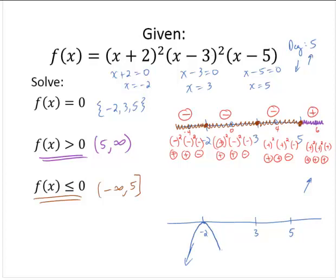x minus 3 squared means the graph bounces off again at 3. x minus 5 is multiplicity 1, so it passes through at 5. From the sketch, where the function is greater than 0, the outputs are positive — so we take that part of the number line. Where the outputs are less than or equal to 0 is everywhere else, and we shade that part of the number line.